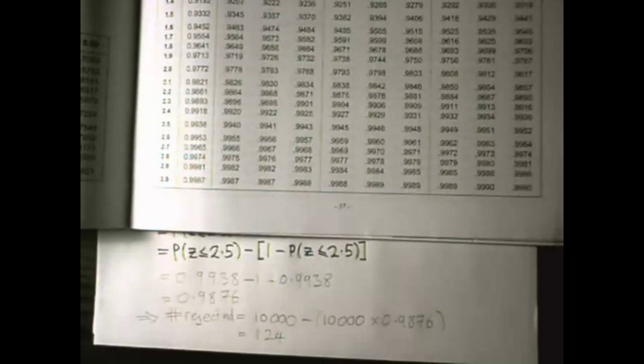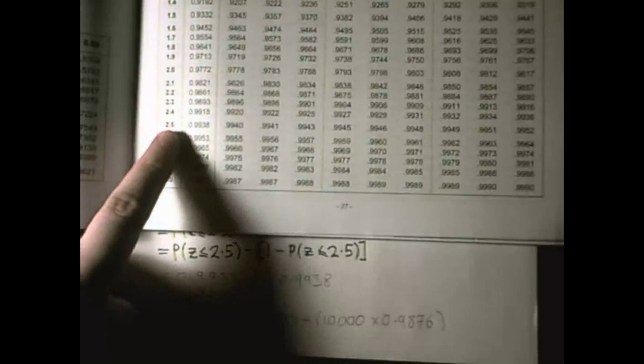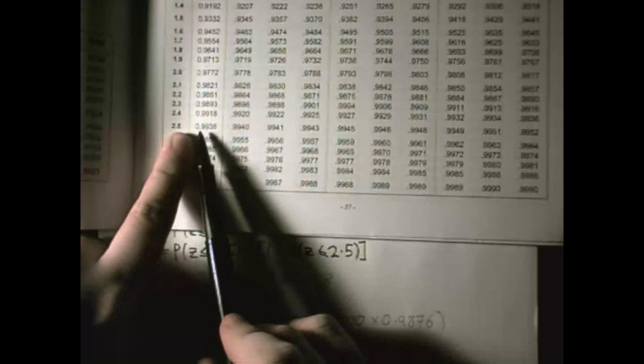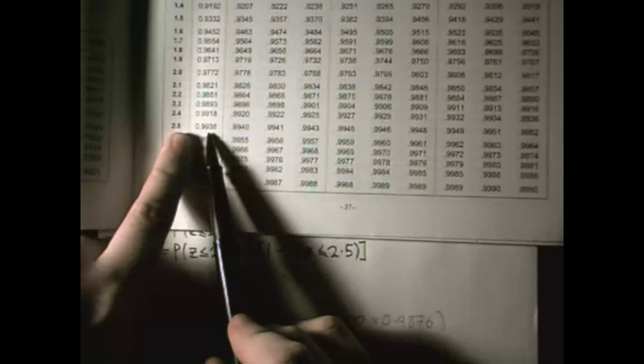Now I can replace those two just reading from my z tables. This here is the number for z is less than 2.50 which is what I have, and that number is 0.9938.